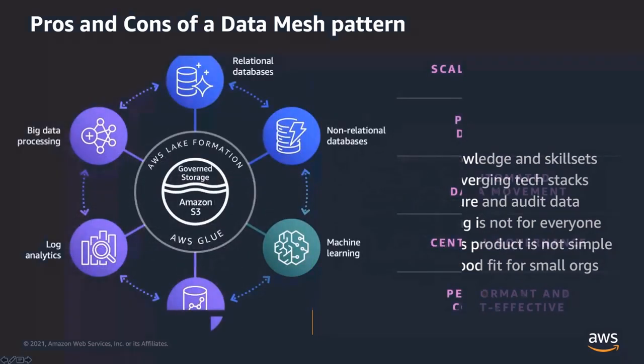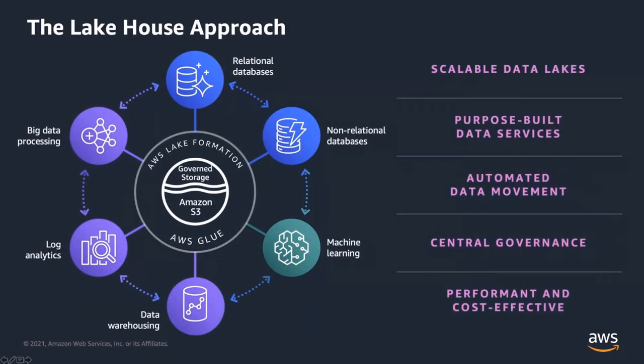Shifting gears — we've talked about what a data mesh is and its pros and cons. The next thing is the lake house approach, which AWS has talked about quite a bit. When we talk about a lake house approach, it focuses first on building a scalable data lake — putting all your raw and transformed data into a single place using Amazon S3 — and being able to bring in purpose-built data services on top of that to consume or store the data for other purposes.